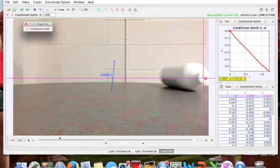Using Tracker, I analyzed the video, setting the origin at the center of the bottle of conditioner and using its diameter for the calibration stick. After tracking the points, a graph was produced.